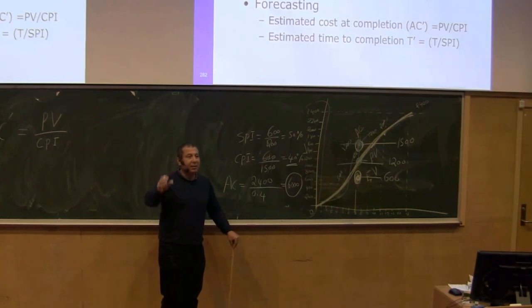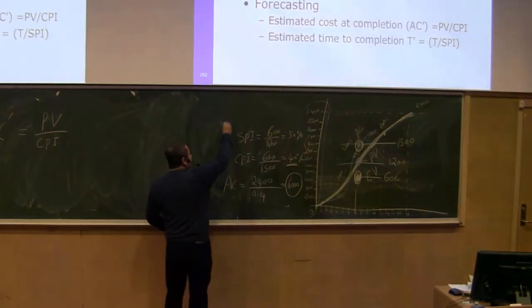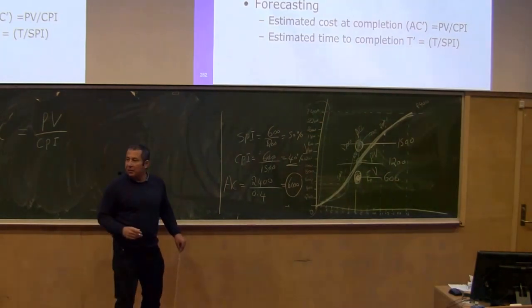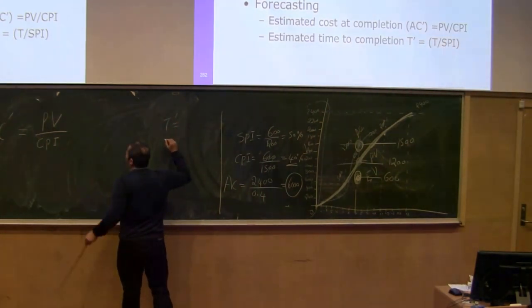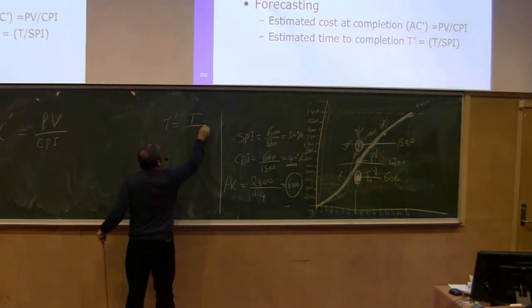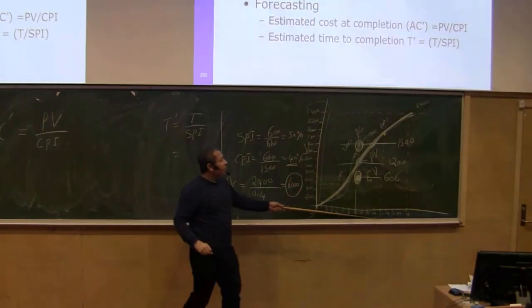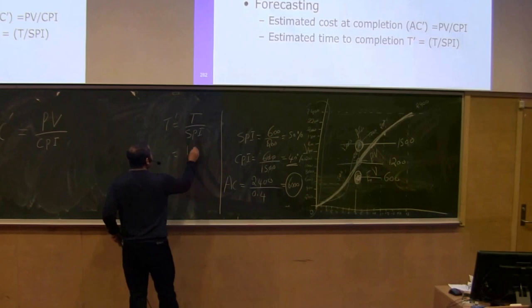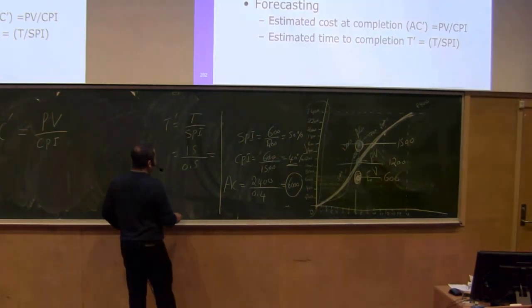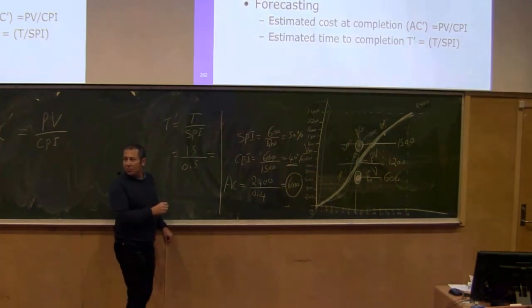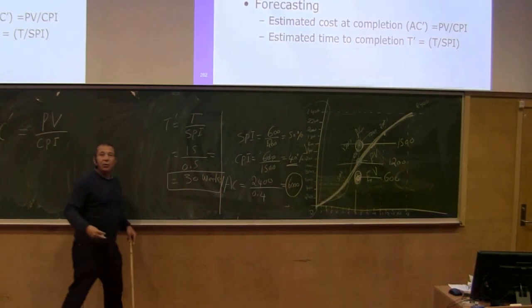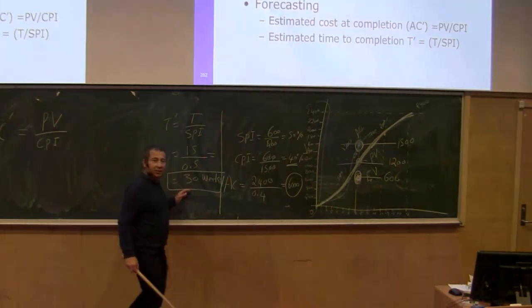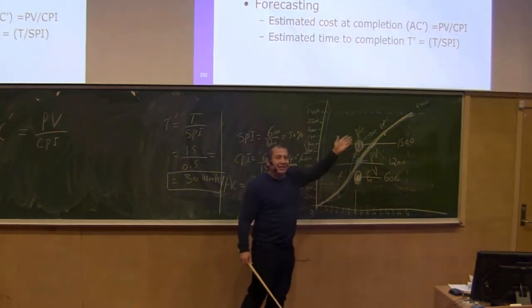To know the future of your task is critical. We can also predict the total completion time using the formula: T' = original time divided by SPI. In this project, the original duration was 15 weeks divided by 0.5, which gives 30 weeks. So this project, if you continue as you are, will end up taking 30 weeks — a 15-week delay — and will cost 6,000.